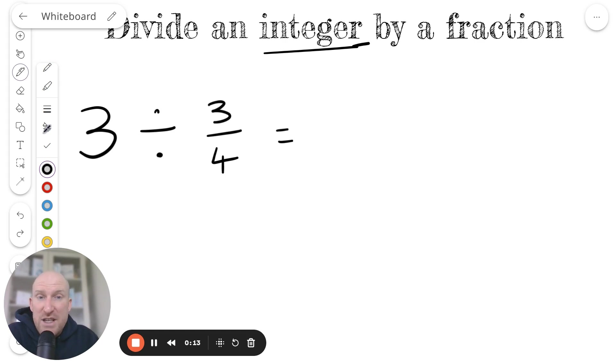If you don't know what an integer is, it just means a whole number. As you can see here in the question, we have 3 divided by 3 quarters, and the 3 is a whole number.